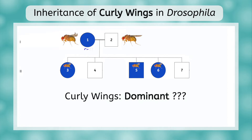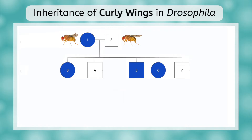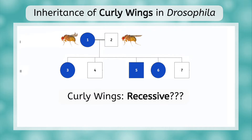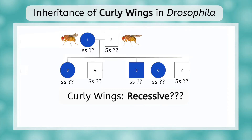Do we have enough information to decide if the trait is dominant or recessive? If it was dominant, mom would have to be big C, little c, as not all of the offspring inherited the trait, and dad would have been little c, little c. If it was recessive instead, mom was little s, little s, and dad would have been big S, little s — using S since straight would be dominant. Both scenarios are possible, so we don't have enough info yet and need to look at the next generation.